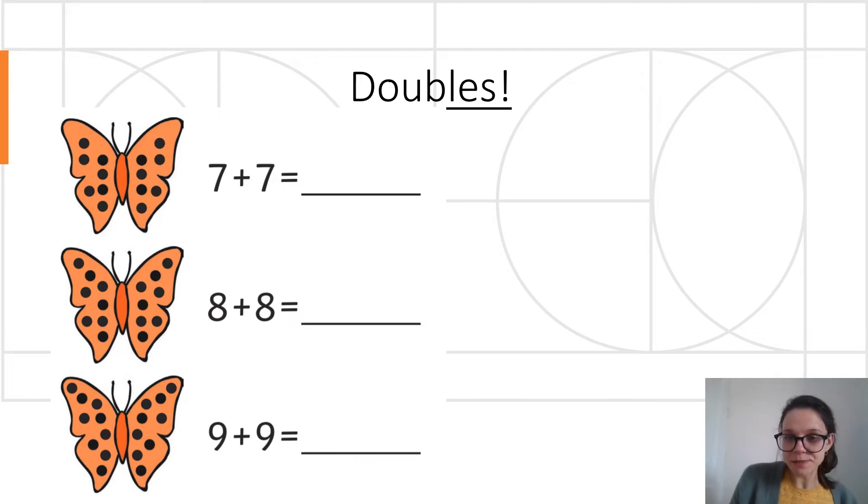Shall we check your answers? So seven add seven is 14. Once you've worked that out, you only need to add two more to get you eight add eight is 16. And then two more again for nine add nine is 18. Really, really well done if you've got all those answers right. If you've got them right by counting each dot on the butterfly, that's okay. But there's a much quicker strategy for you, and that's noticing that each of them adds two every time. So there's a difference of two between 14 and 16, and then we just add another two from 16 to 18.